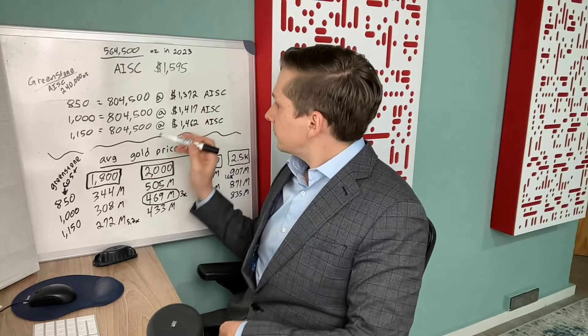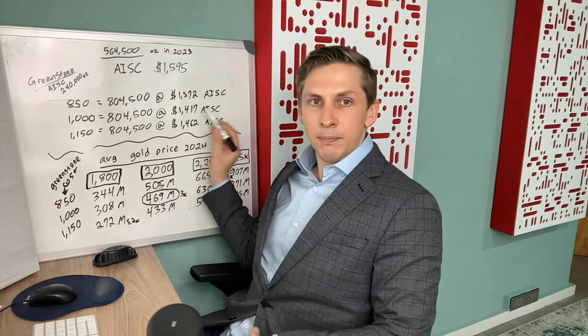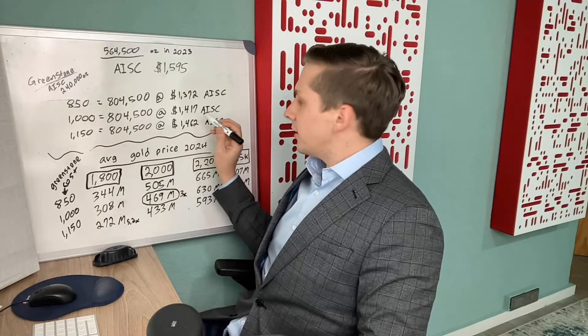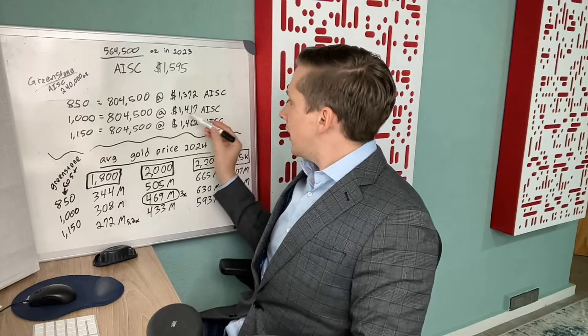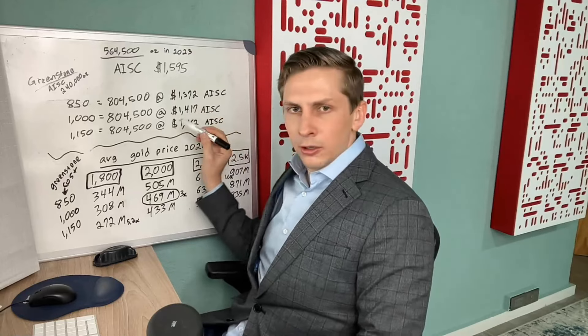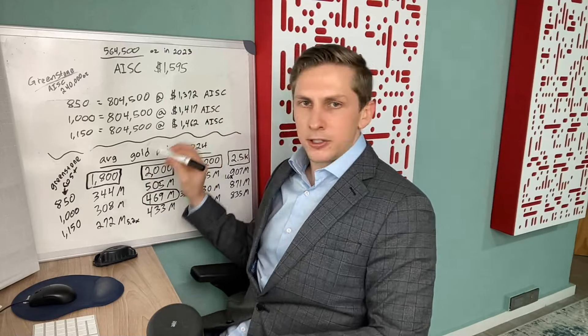Let's say the Greenstone mine comes in producing at $1,000 an ounce. Well, that brings the company-wide all-in sustaining cost to $1,417. So what does it look like if we're here? Gold today is a little over $2,000 an ounce.